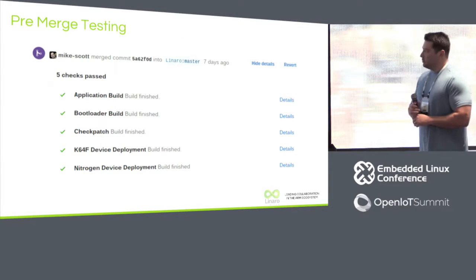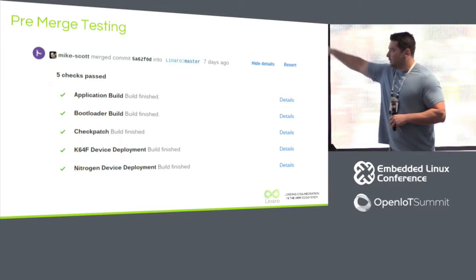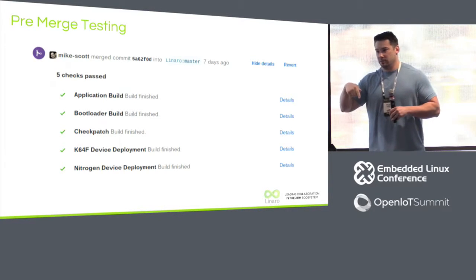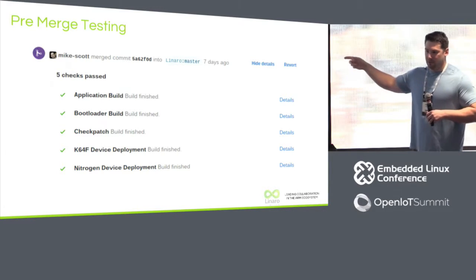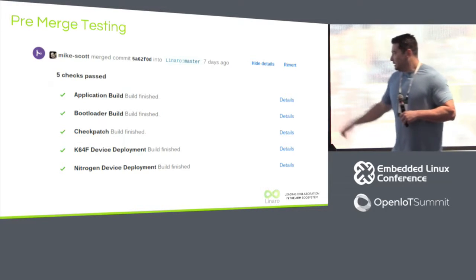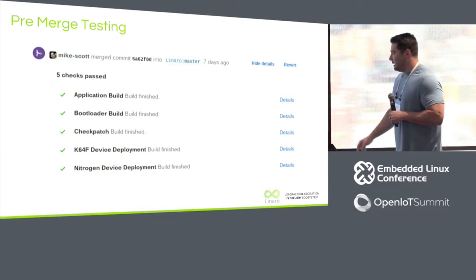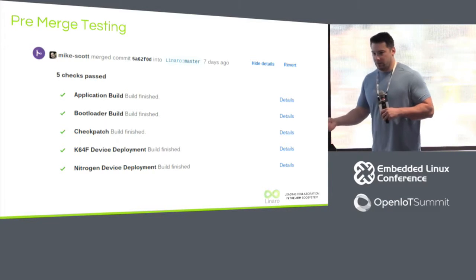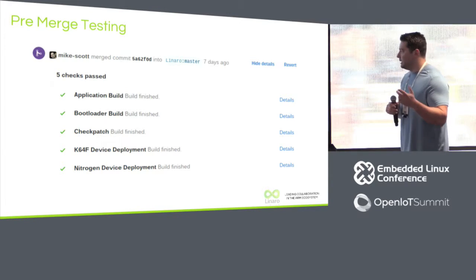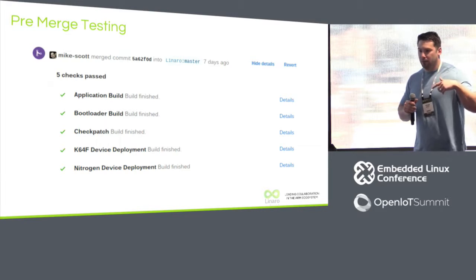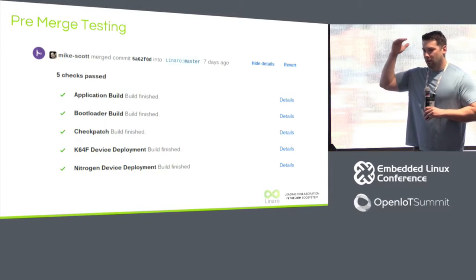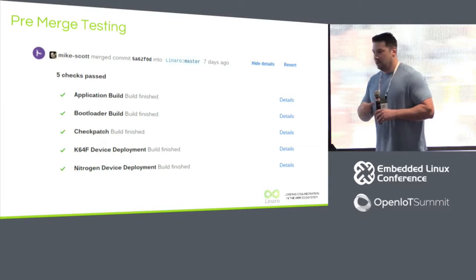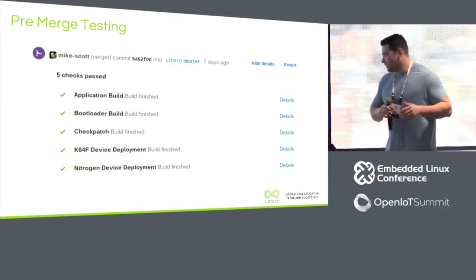For pre-merge testing, we've got it all hooked up to GitHub. If anybody does a pull request, they get five checks: we build the photo application against tip of master plus the pull request; sanity check the bootloader; run checkpatch just like on upstream Zephyr in Gerrit; and then we actually deploy to devices — flash a bootloader and the application the pull request represents to a device and check that it actually comes up. We use the test case utilities library within Zephyr to create parsable output. We can basically tell that Bluetooth came up, we're advertising the right profile — the app comes up, the Bluetooth radio comes up, and that's good enough.